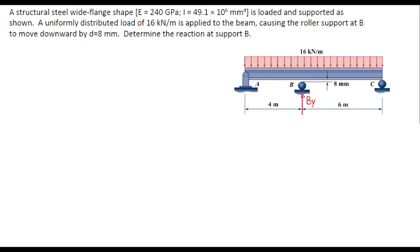A uniformly distributed load of 16 kilonewton per meter is applied to the beam which causes the beam to move downward and touch the support at B.